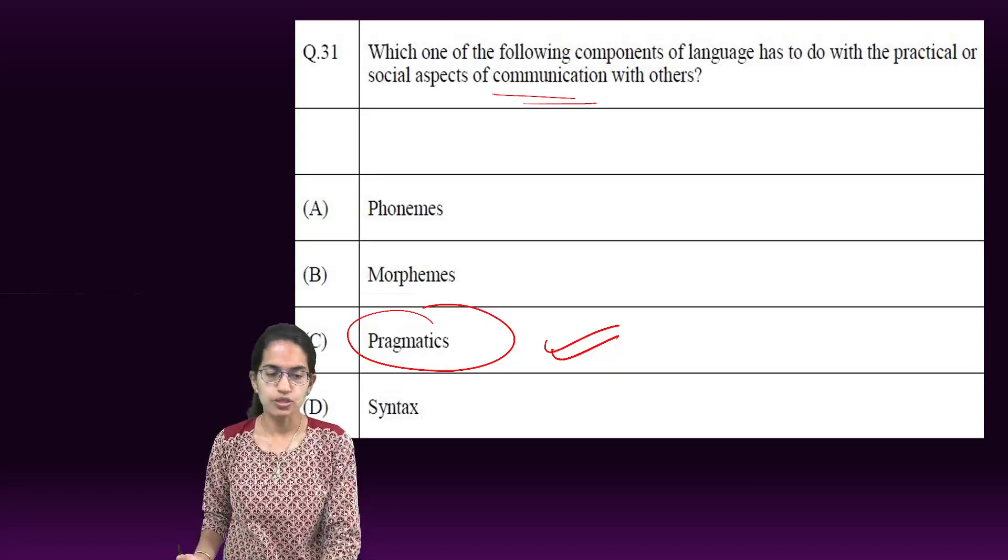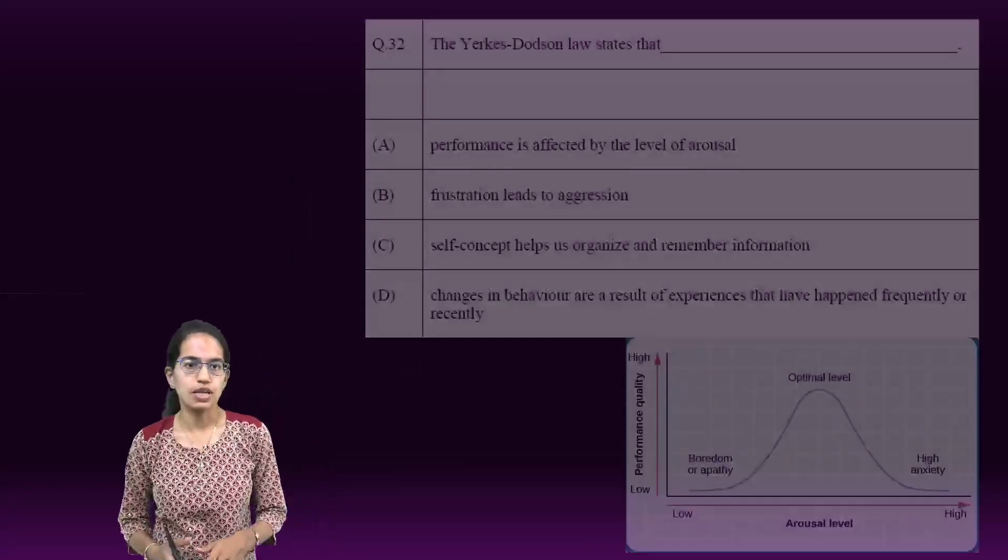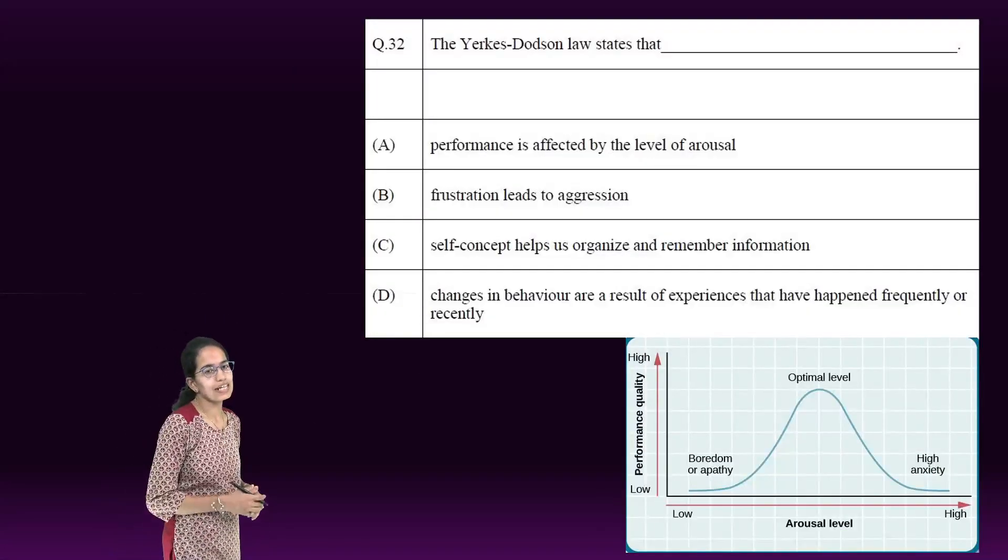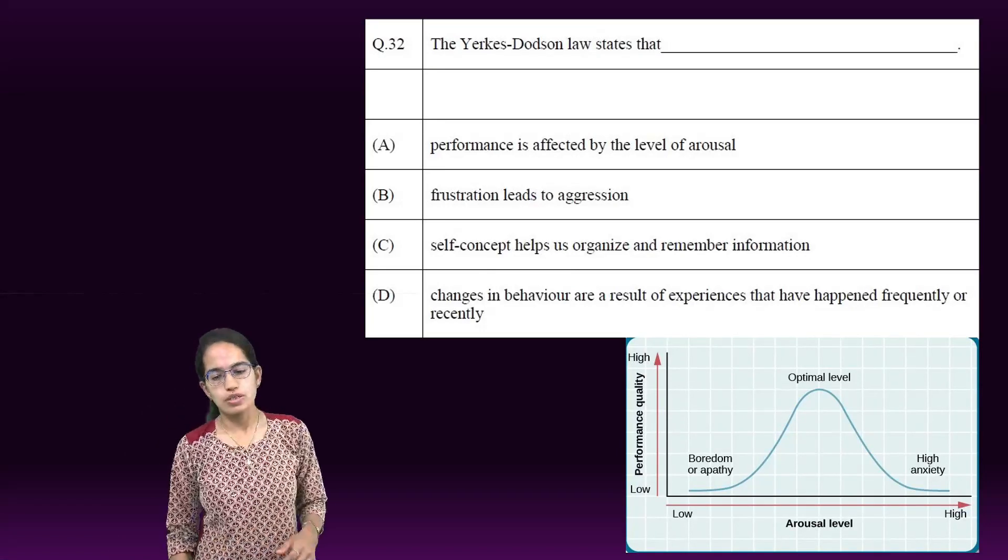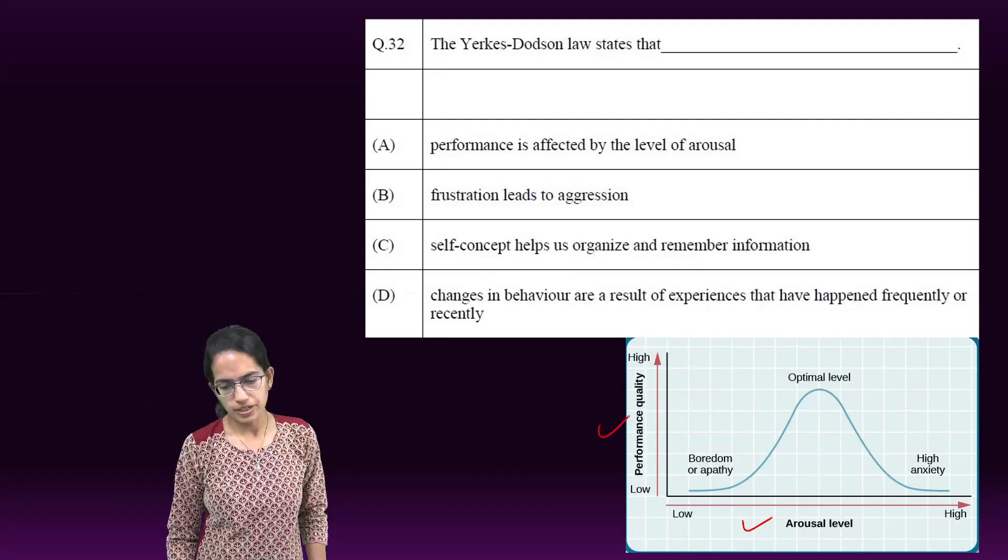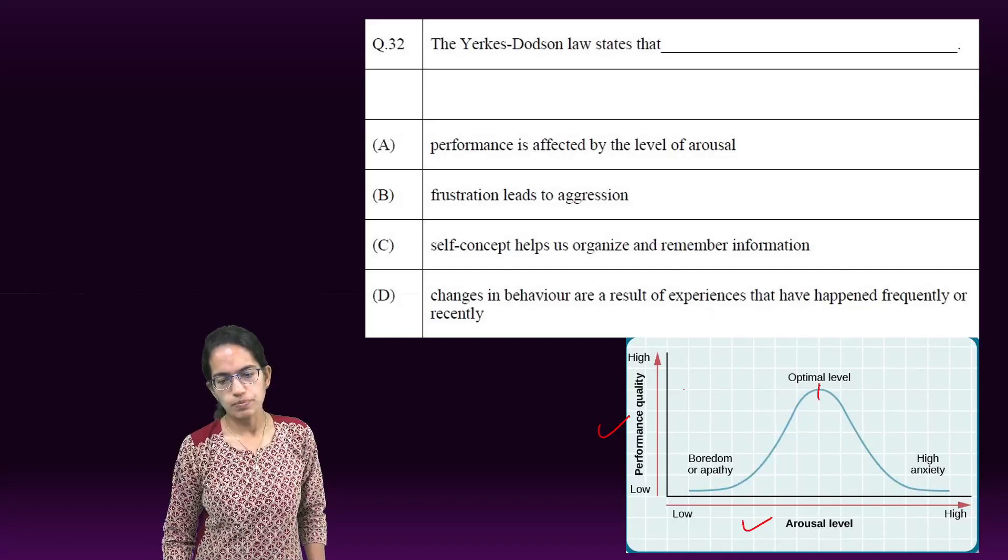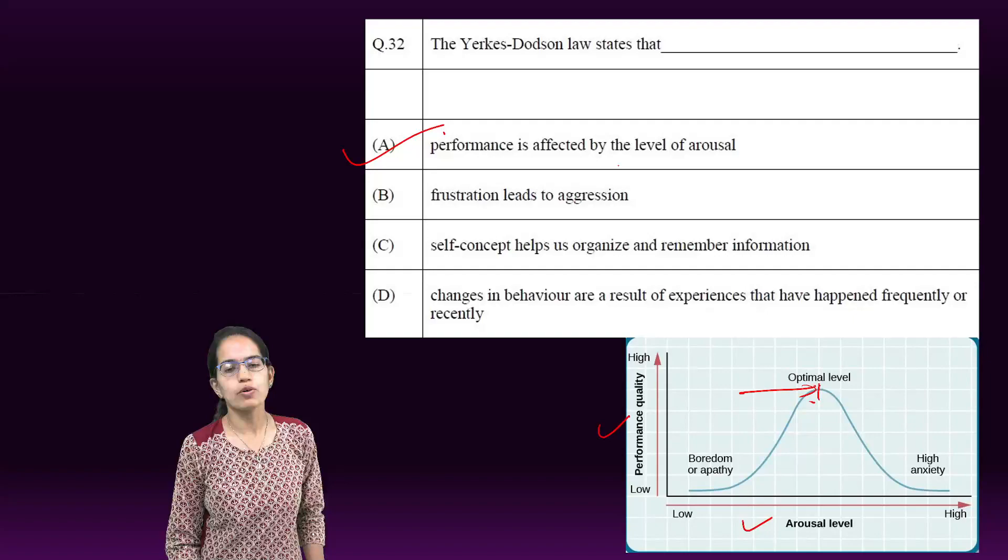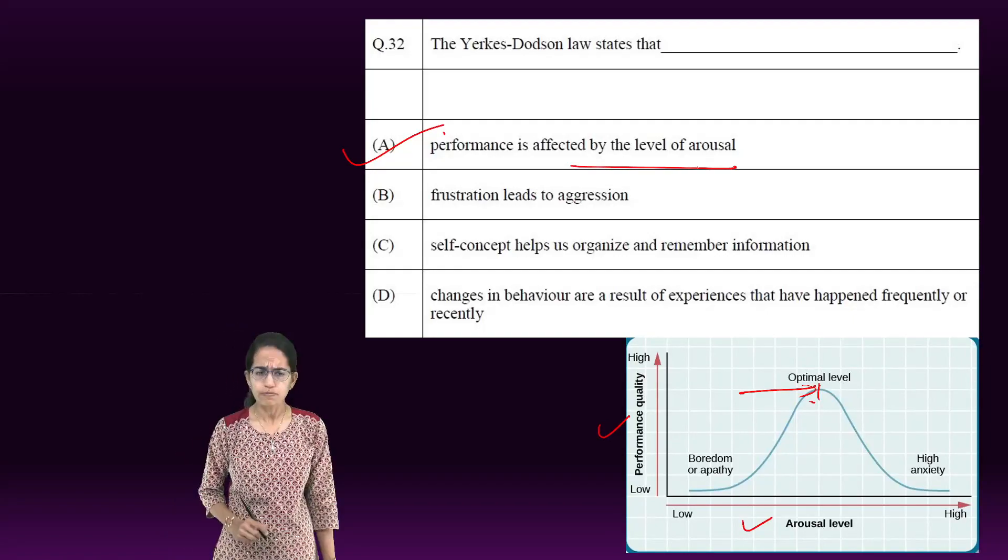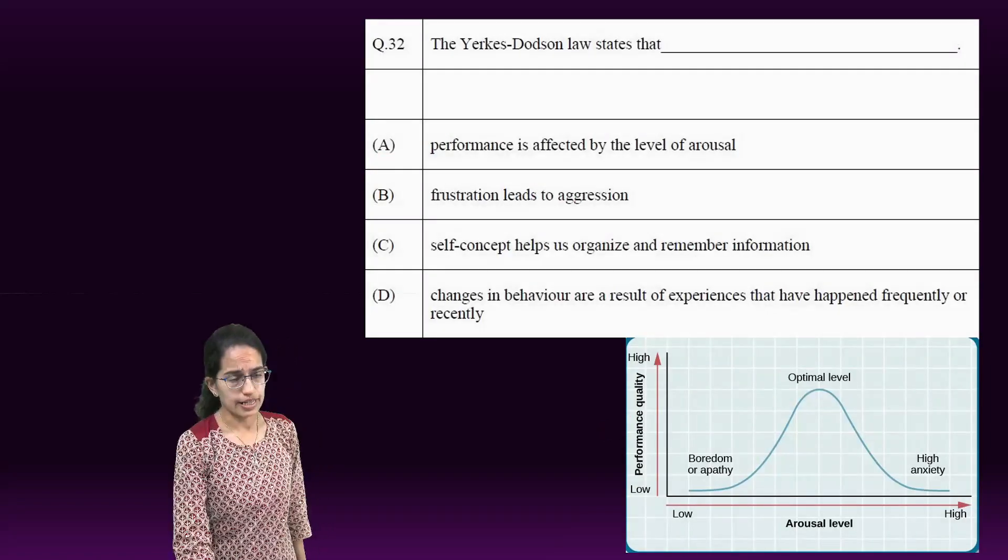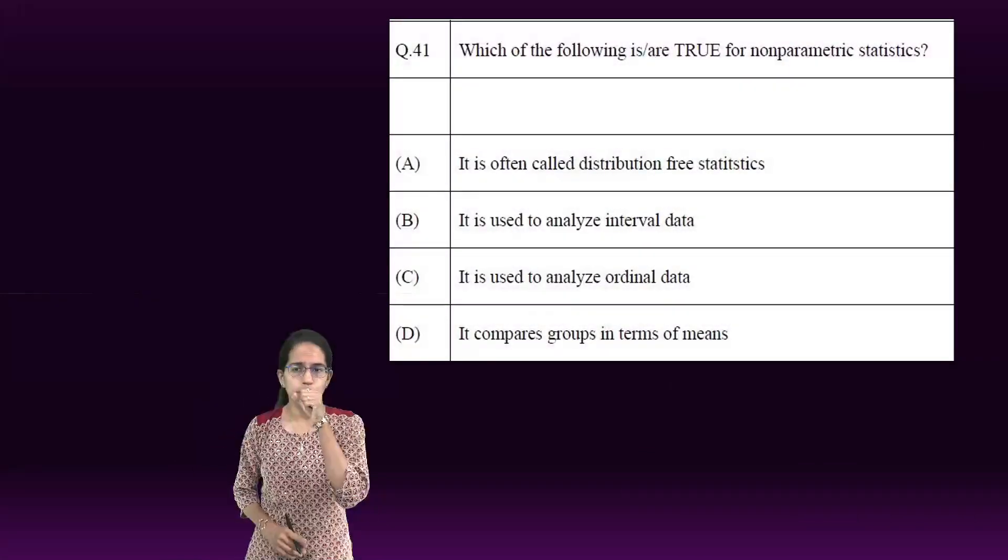The next is Yerkes-Dodson law, which talks about the relation of arousal with respect to performance. At an optimal level of arousal, the performance is highest, and therefore 'performance is affected by the level of arousal' becomes the right answer for this question.